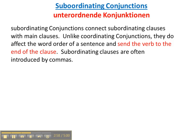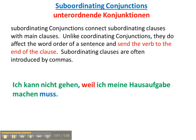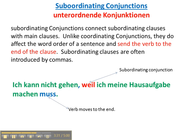Subordinating conjunctions are often introduced by commas. For example: Ich kann nicht gehen, weil ich meine Hausaufgabe machen muss. Because we're using a subordinating conjunction, it's set off by a comma, and the verb — which was next to ich, the subject — went to the very end of the second clause. The normal word order would be Ich muss meine Hausaufgabe machen, but because it follows the subordinating conjunction weil, the verb moves to the end. Some people call these 'verb kickers' because they kick the verb to the end.